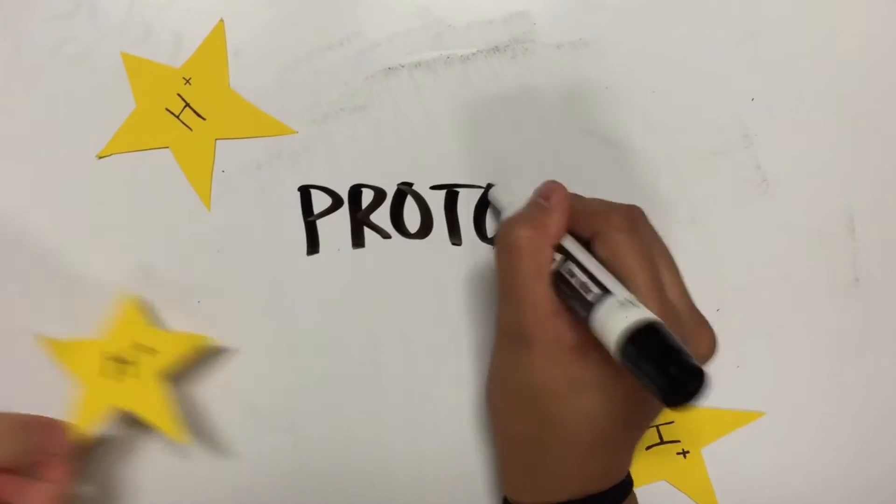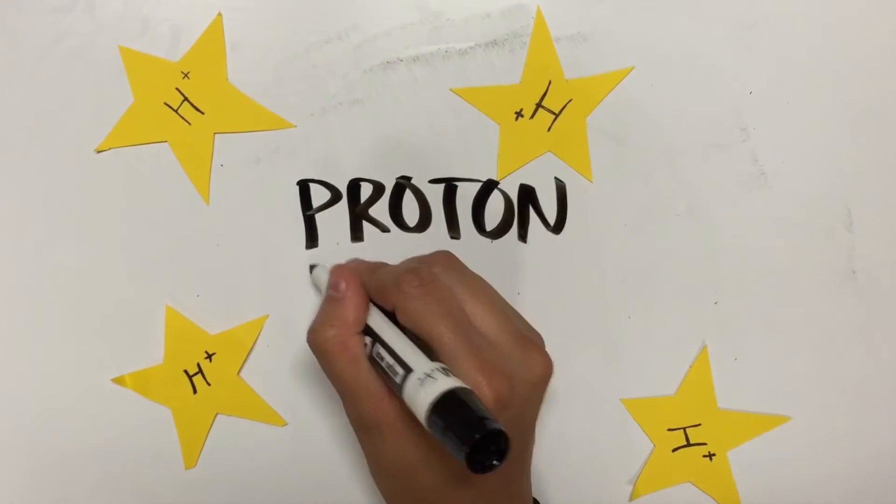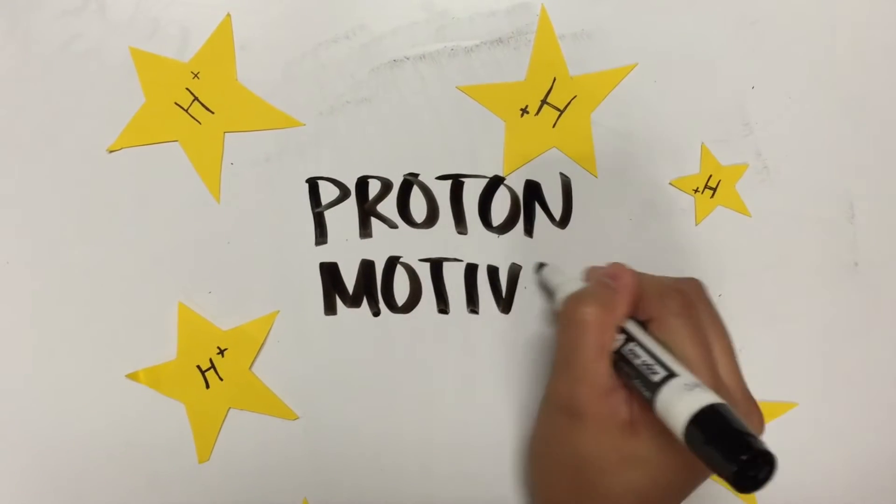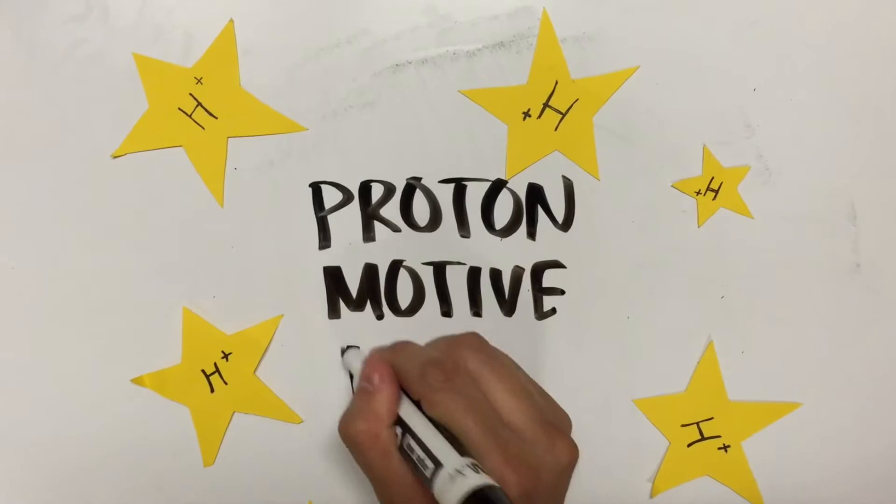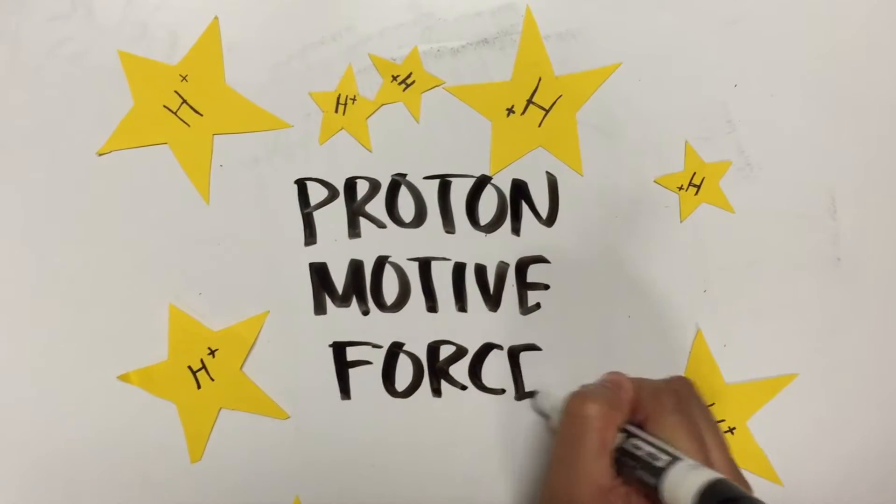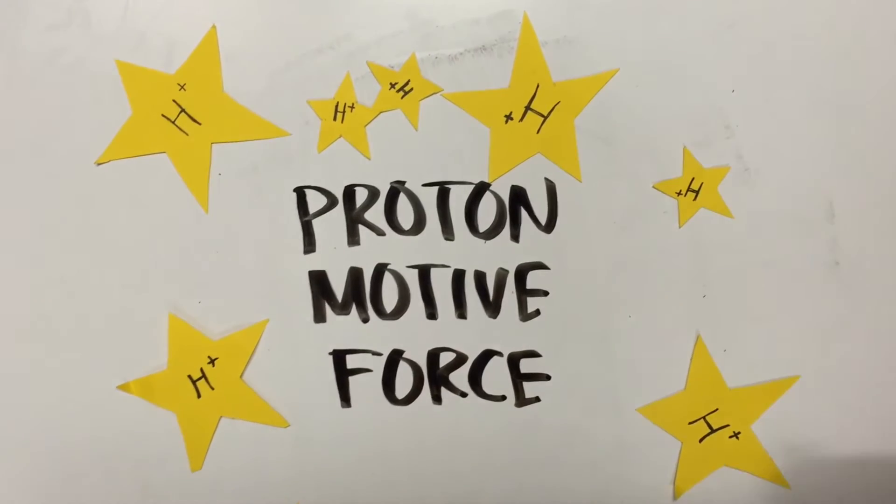Like a hydroelectric dam, protons are pumped across the membrane, creating a proton reservoir on one side. Protons flow through protein turbines within the membrane, which powers ATP synthesis similarly to water flowing through mechanized turbines to generate electricity.